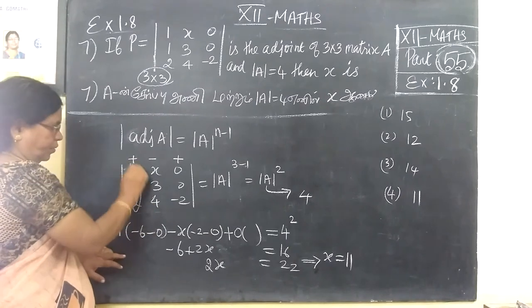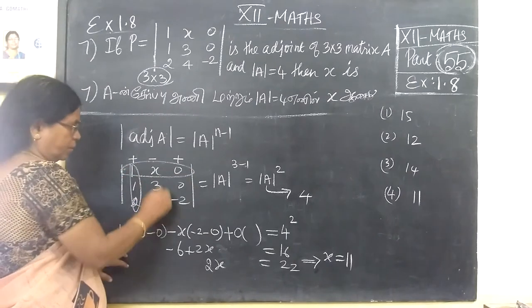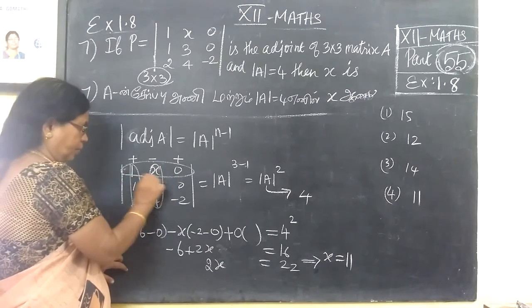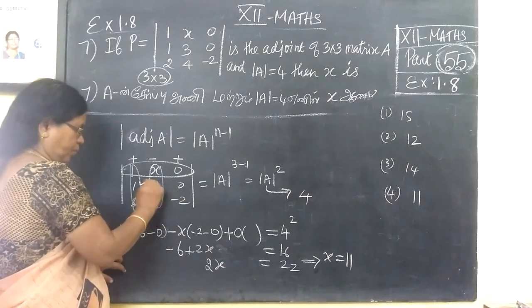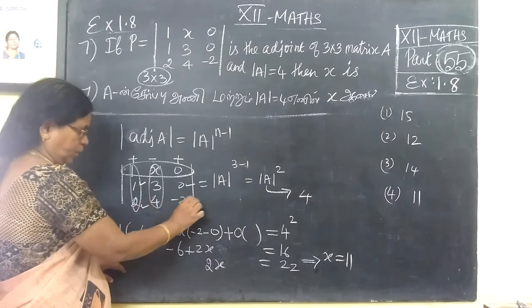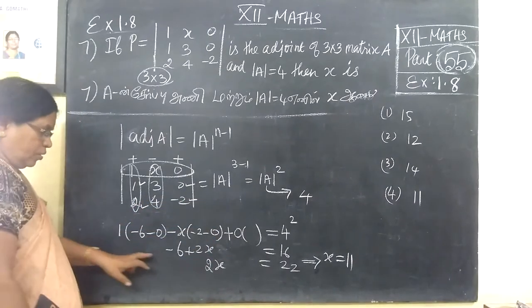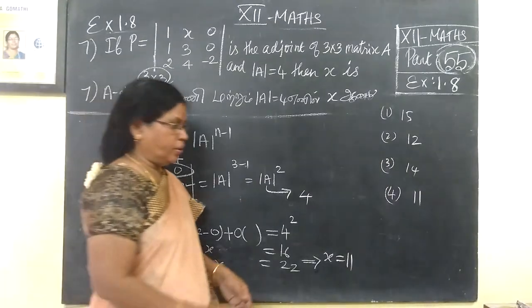1 by x minus 0 equals. Then minus x by x minus 0 equals. Here is the determinant multiplied by the determinant. Then 0 is something.